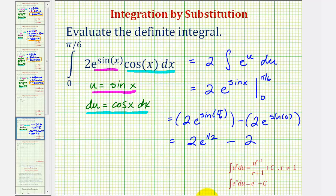We could factor out the two and write this as two times the quantity e to the one-half, which is the same as the square root of e, minus one. Either of these last two expressions would be the exact value of the definite integral. I hope you found this helpful.